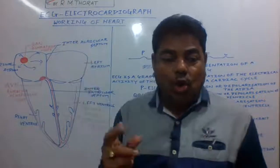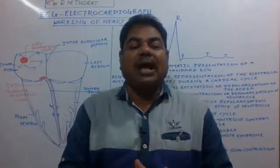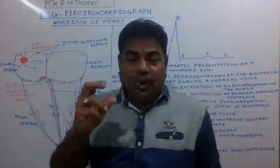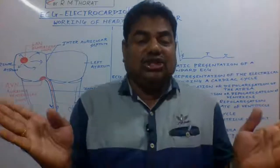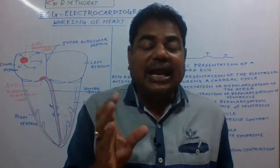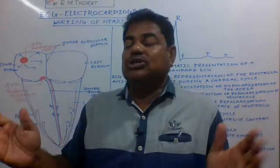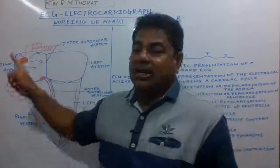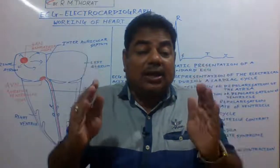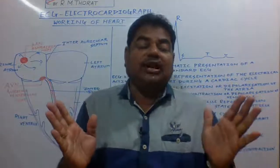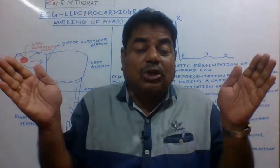We call it the SA node — that is the sinoatrial node. It acts as a pacemaker. This node, made of cardiac muscles, emits electrical impulses. These electrical impulses are emitted onto the auricles.